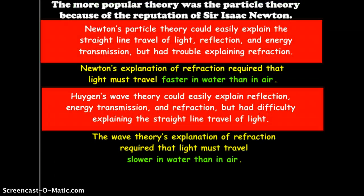So, the more popular theory originally was the particle theory because Sir Isaac Newton had such a strong reputation for understanding the science and math. Now, Newton's particle theory was easily explained when you were dealing only with straight line motion. And straight line motion included reflection and the transmission of energy. But it had a great deal of difficulty in explaining the idea of refraction, that the light would change or seem to change direction based on media. With Newton's explanation, it had to be accepted that light could travel faster in water than in air.